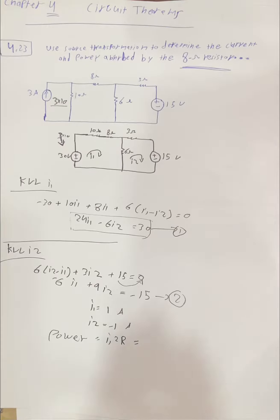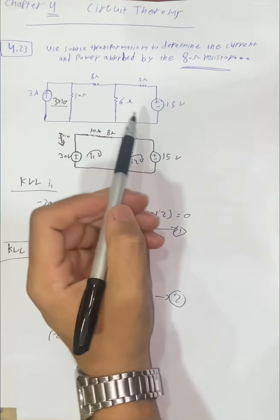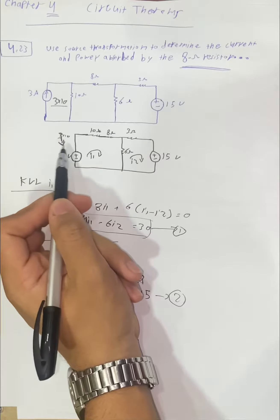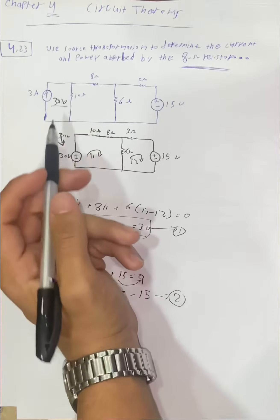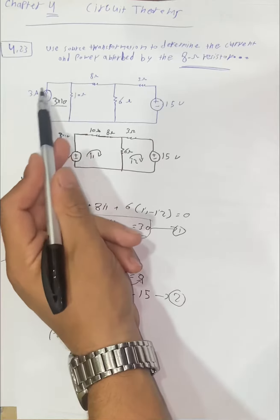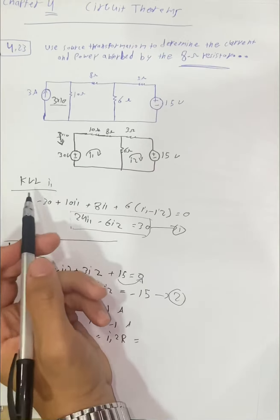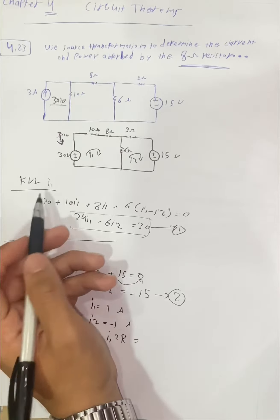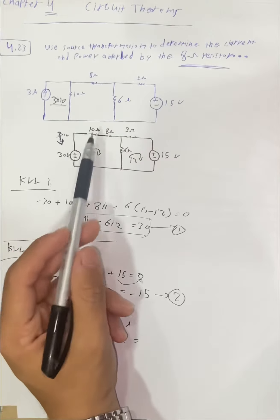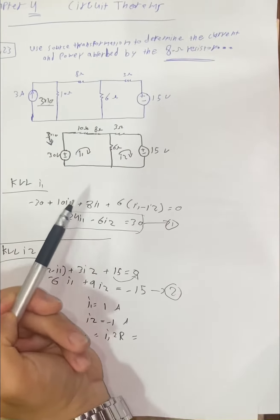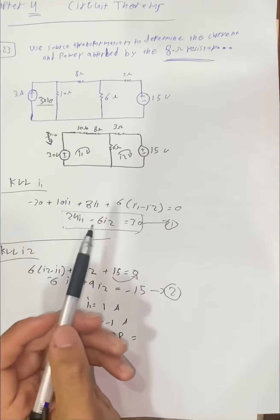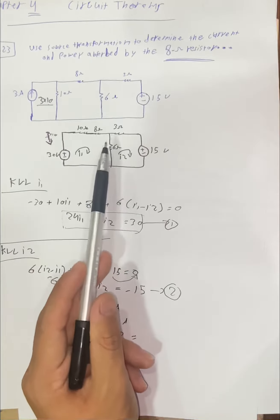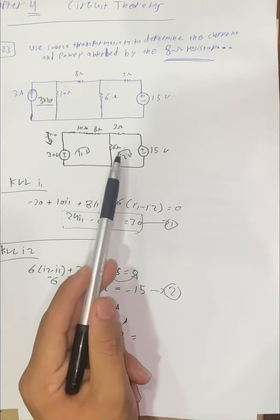Now I will explain source transformation. This is the circuit will be like this because I used source transformation. Now at loop I1, the voltage equation: I1 minus 30 plus 10i1 plus 8i1 plus 6i1 and i2 negative minus i2.